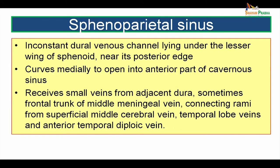The sphenoparietal sinus is an inconstant dural venous channel lying under the lesser wing of the sphenoid bone near its posterior edge. It curves medially to open into the anterior part of the cavernous sinus, receiving small veins from adjacent dura, sometimes the frontal trunk of the middle meningeal vein, connecting rami from the superficial middle cerebral vein, temporal lobe veins, and the anterior temporal diploic vein.